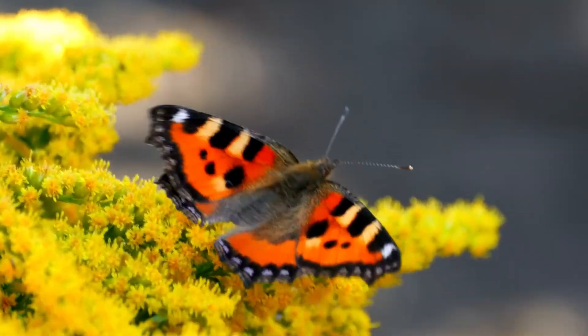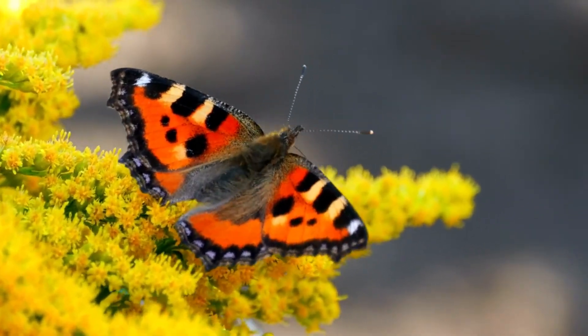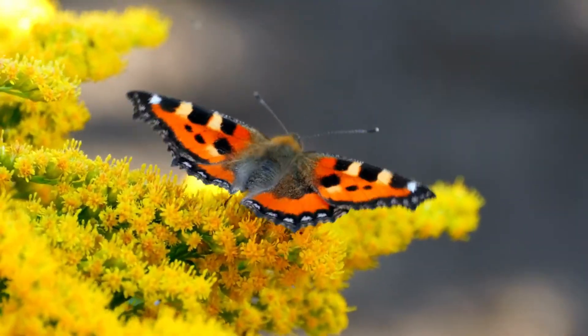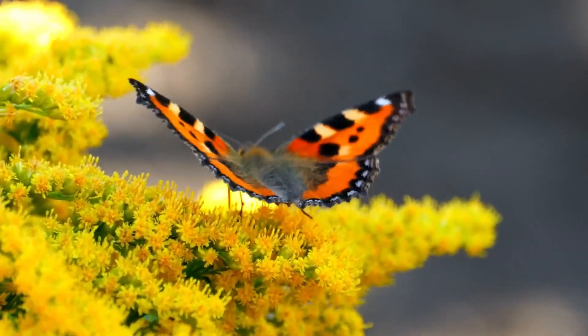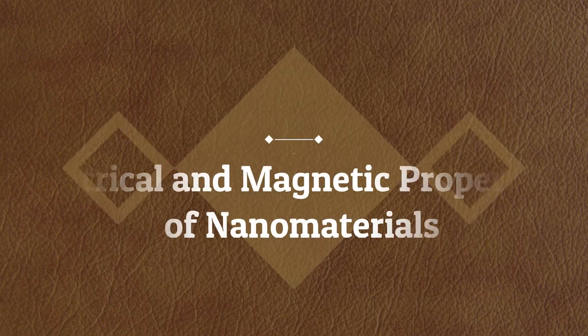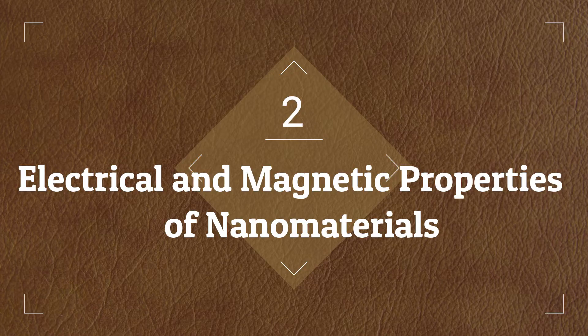Another amazing example of this phenomenon is butterfly wings, which appear to be shimmering and multi-colored due to their nanoscale structural units. Electrical and magnetic properties of nanomaterials.